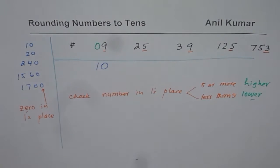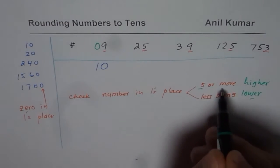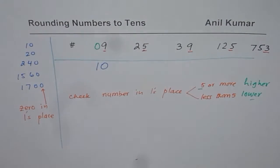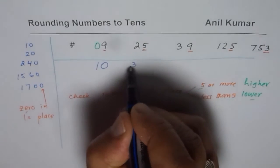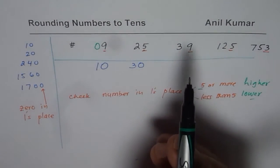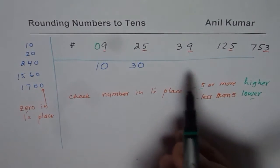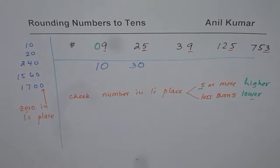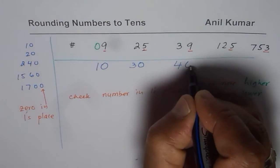In 25, again, what you notice is 5 or more. Since it is 5, it will be rounded higher. So we get 30. 9, now you know, is 5 or more. So we'll increase this 3 by 1. So that rounds to 40.